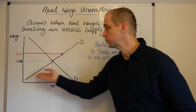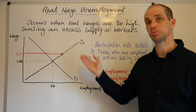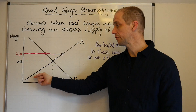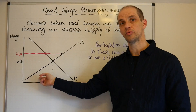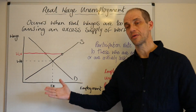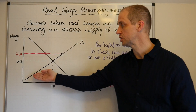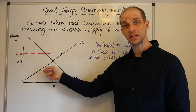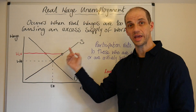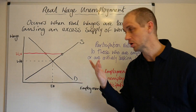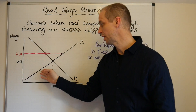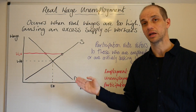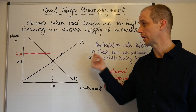We can also see the supply of workers, which in effect represents their actual reservation wages — the minimum wage that they are prepared to work for under prevailing conditions.